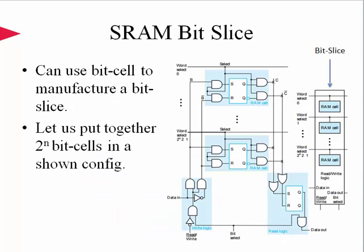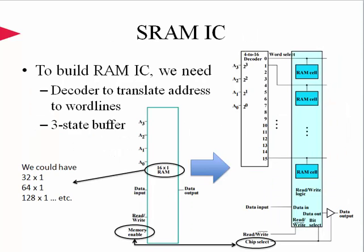Bit cells are combined to make up a single bit slice. If you put together 2^N bit cells in the shown configuration, we can get 2^(N-1) word selects for each cell, which selects a particular cell. There is also extra logic to input the data and provide read-write functionality to this bit slice. There is an extra latch at the output used to store the requested data before the next clock cycle. To build a static RAM IC, we need a decoder to translate addresses to word lines, and three-state buffers for enabling and disabling the output by the chip select input, also known as memory enable.